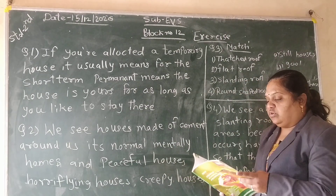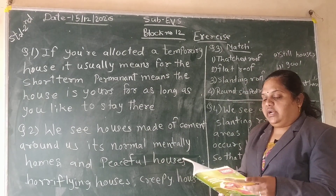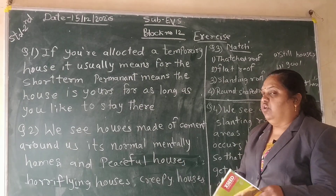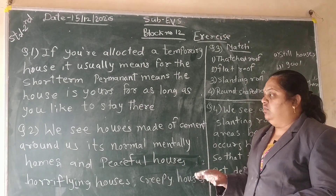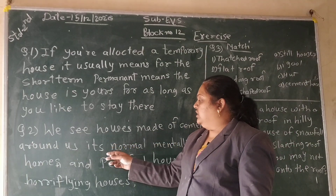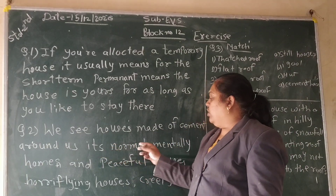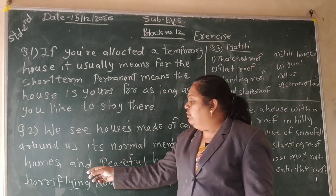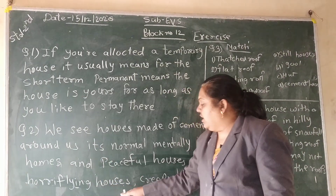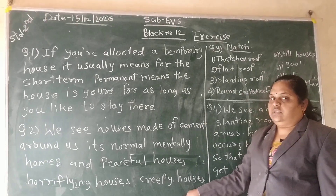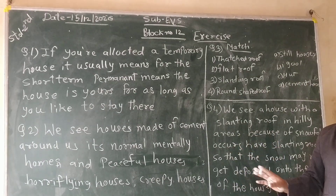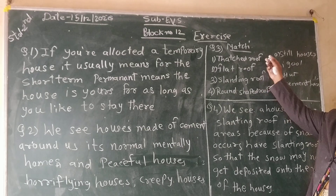Question number two: What kind of houses do you see around you? We see houses made up of cement around us — normally mental homes and peaceful houses, hilly houses, and these types of houses we can see around us.